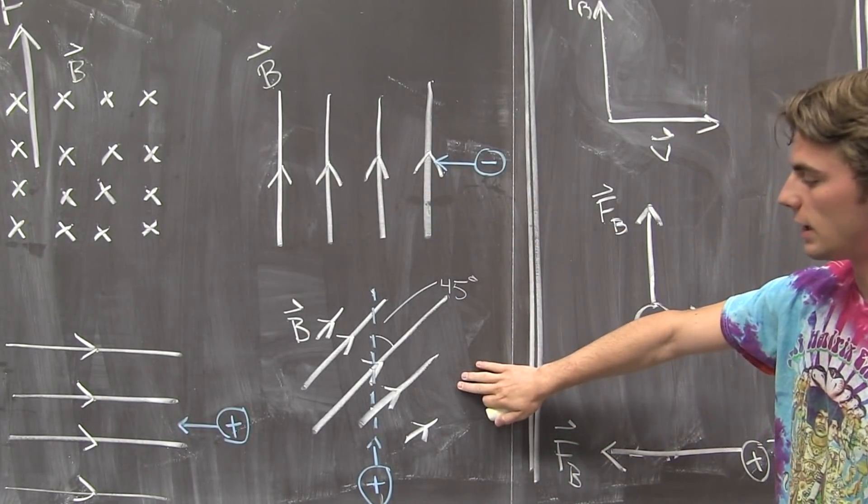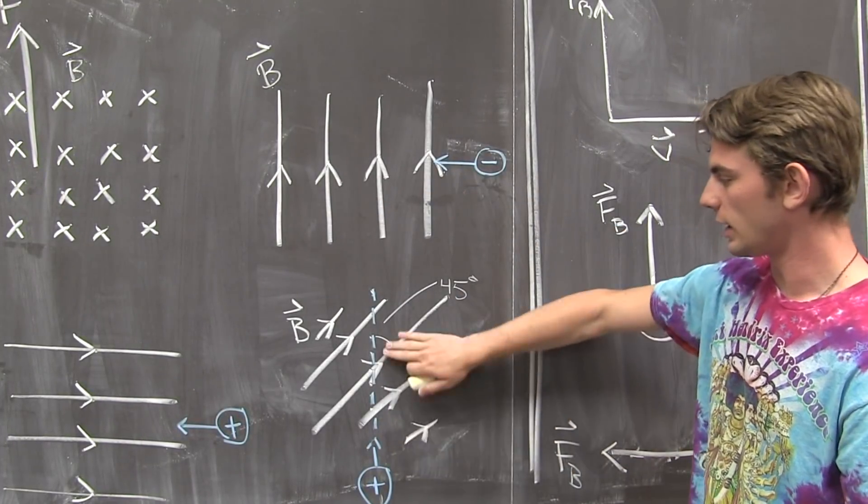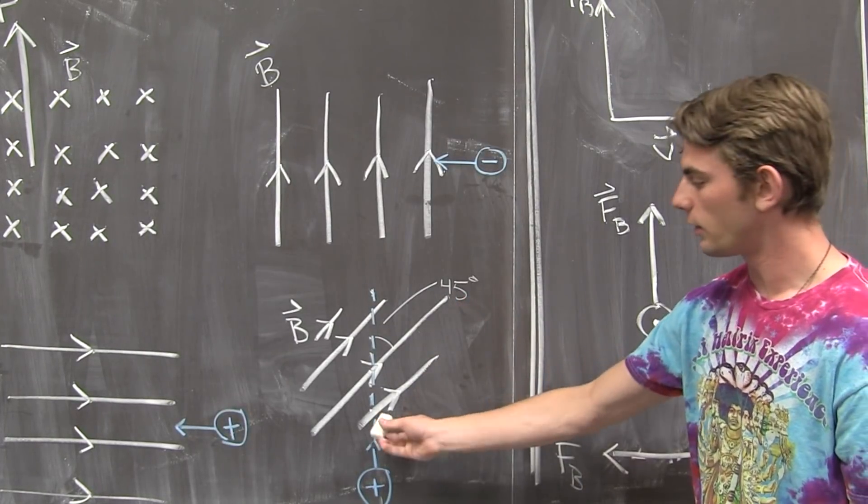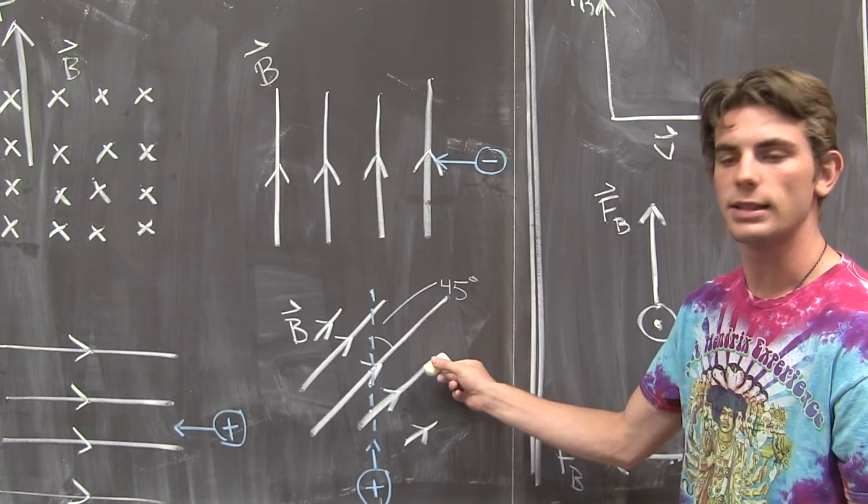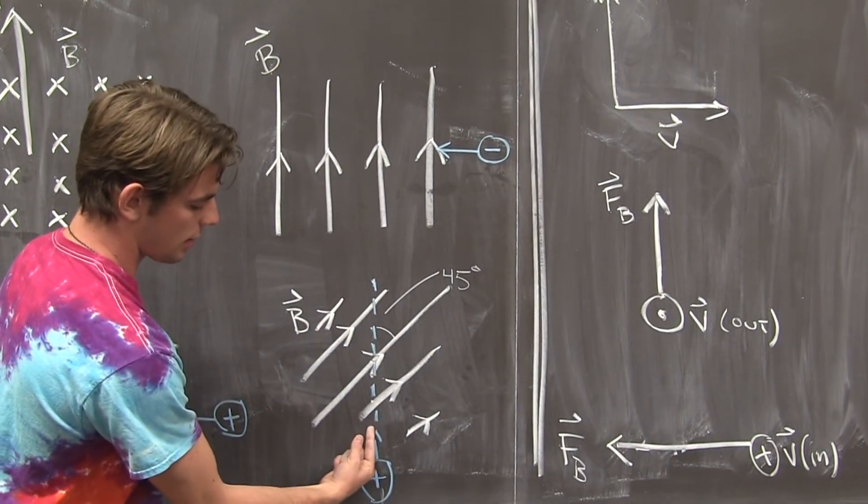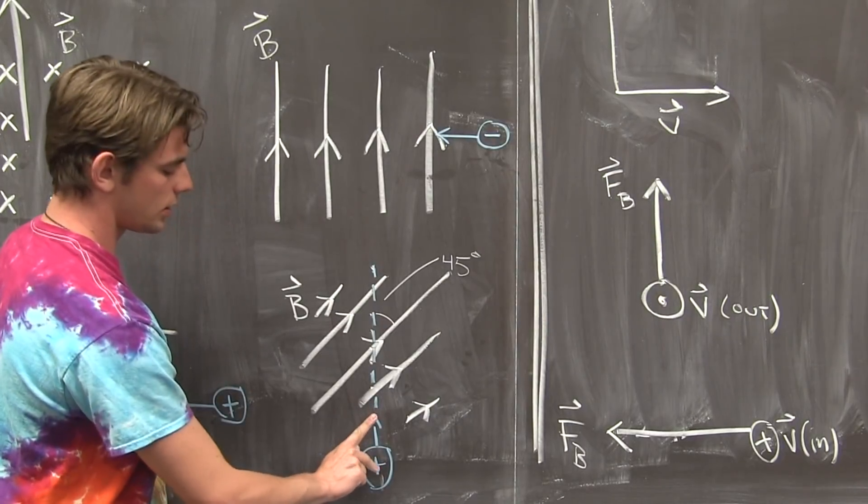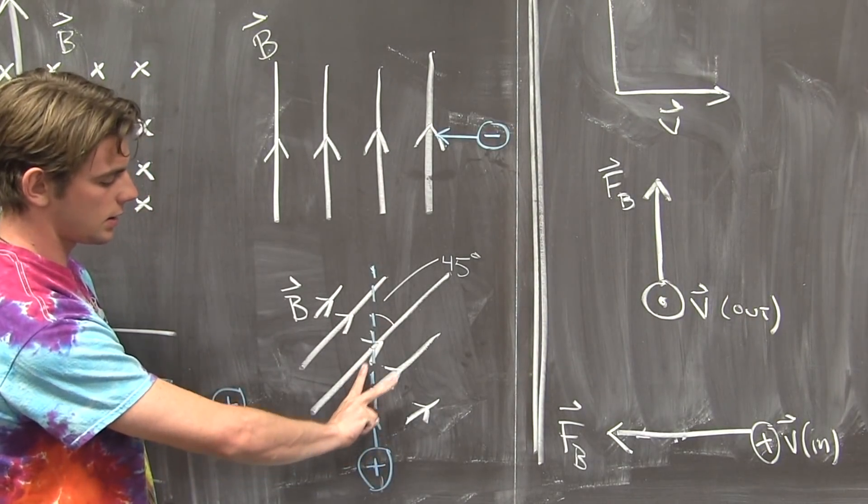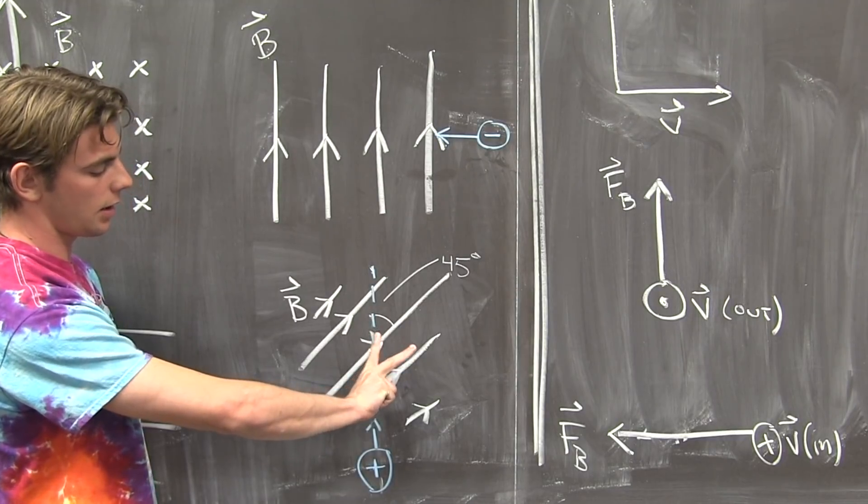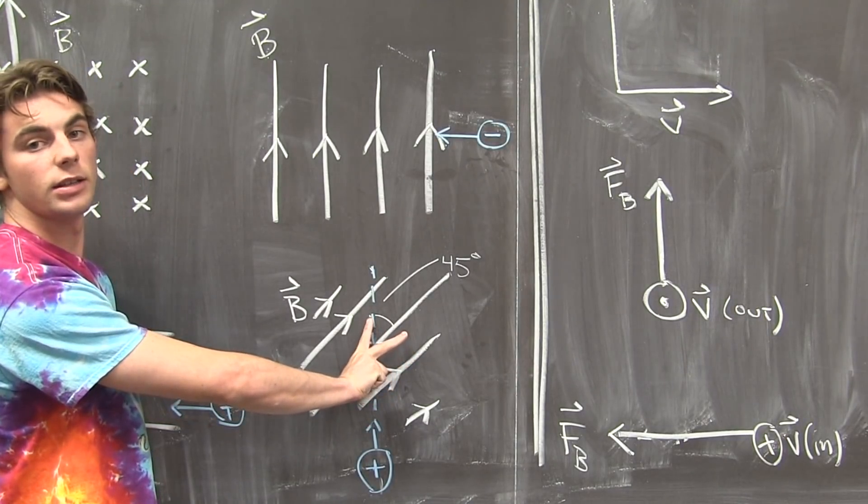The last example is a positive charge moving at this 45 degree angle with a magnetic field going slanted. So, our vector v is going up. Our magnetic field is lined up this way, and our force is still into the page.